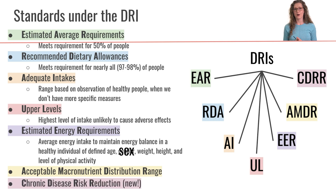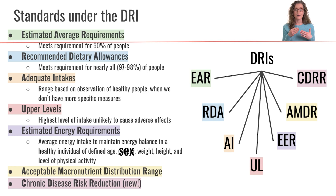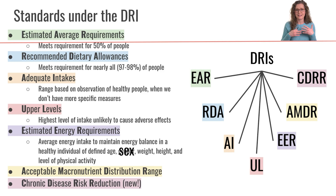There is also a brand new category that's part of the expanded standards of the DRIs — the Chronic Disease Risk Reduction, or CDRR. The CDRR characterizes nutrient intakes that are expected to reduce the risk of developing a chronic disease. So far, only two nutrients have been evaluated within this lens: sodium and potassium. A CDRR has been set for sodium at levels that reduce the risk of developing cardiovascular disease and hypertension, whereas there wasn't enough data available to set a CDRR for potassium. This is something to stay tuned to as more CDRRs may be developed for other nutrients in coming years.